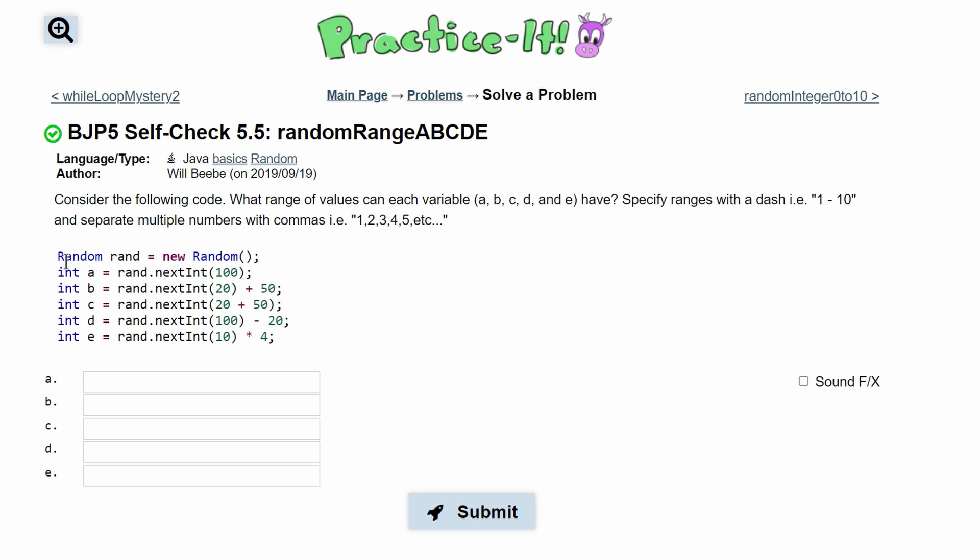So to get a random number we need to use the random class, just like the scanner class or the print stream class.